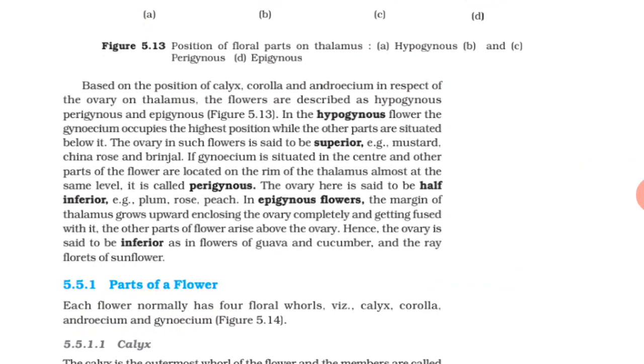Now, parts of a flower. Each flower normally has four floral whorls: calyx, corolla, androecium, and gynoecium.